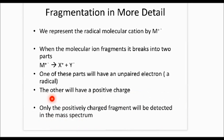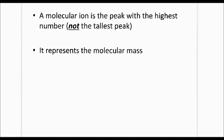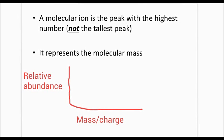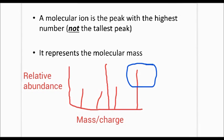Now let's talk about the mass spectrum you actually see — we did cover this last year. The molecular ion is the peak with the highest number; it's not the tallest peak, which many people confuse in exams. Drawing a crude mass spectrum: the y-axis is relative abundance, and the x-axis is mass divided by charge. The molecular ion is the peak on the right-hand side. The tallest peak is called the base peak, which represents the most abundant cation.